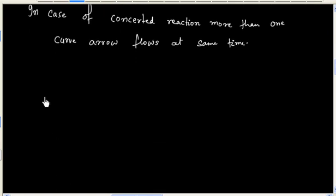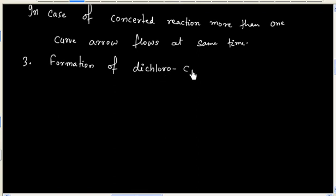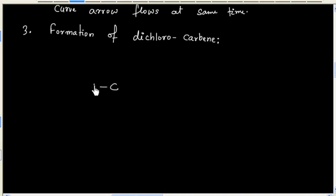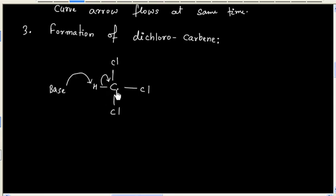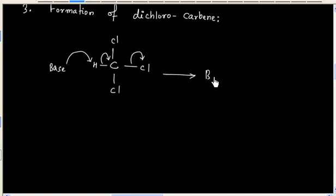Another example we can have is the formation of dichlorocarbene. The base abstracts a proton, the bond pair forms a lone pair, and the chloride leaves the molecule. So we will have dichlorocarbene.